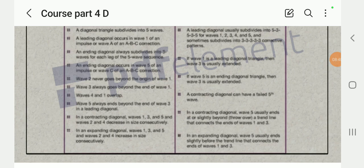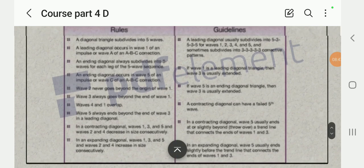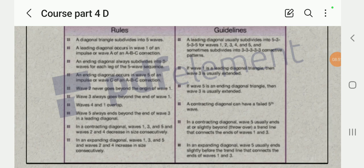In the leading diagonal, in a contracting diagonal, waves one, three, five and waves two and four decrease in size consecutively. In an expanding diagonal, waves one, three, and five, and waves two and four increase in size consecutively. So we're now on the guidelines: a leading diagonal usually subdivides into five-three, five-three, five-three, five-three, five-three patterns—one, two, three, four, and five—and sometimes divided into three-three-three-three-three corrective patterns.